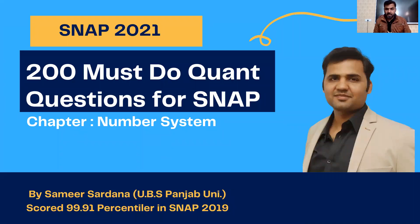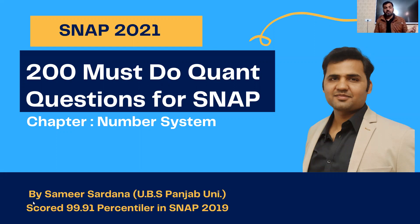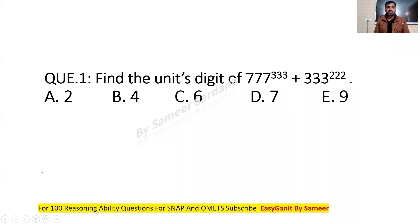Hello everyone, welcome to Easy Ganit. My name is Sami Sardana and we are doing 200 months, two-point questions for SNAP. In this video I'll be taking the chapter of number system — two chapters have already been covered under this series. I have uploaded questions of algebraic identities and factorial. In this video I'll be taking number system questions: unit digit, remainders, Euler remainder theorem, and the last two digits.